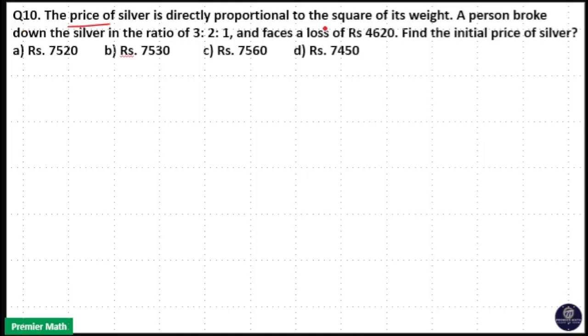The price of silver is directly proportional to the square of its weight. A person broke down the silver in the ratio of 3:2:1 and faces a loss of Rs. 4620. Find the initial price of silver.